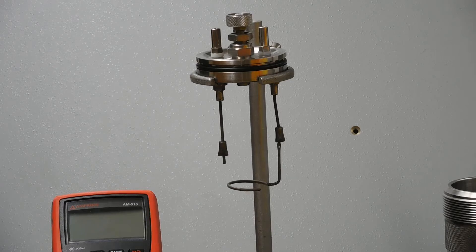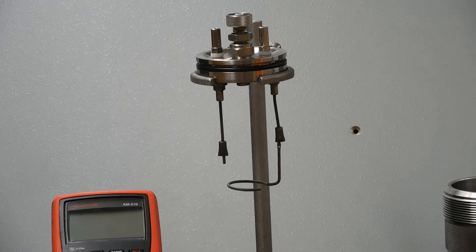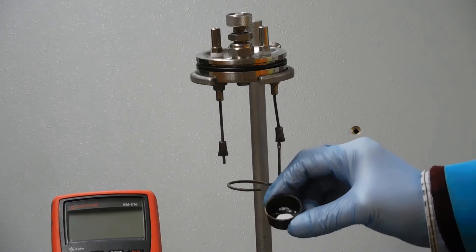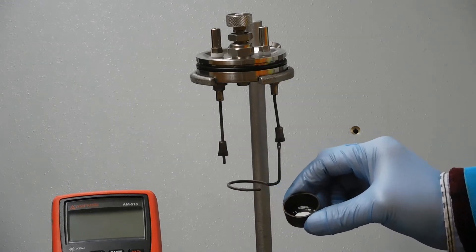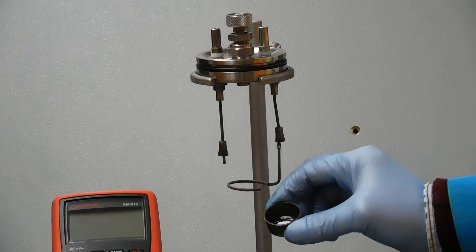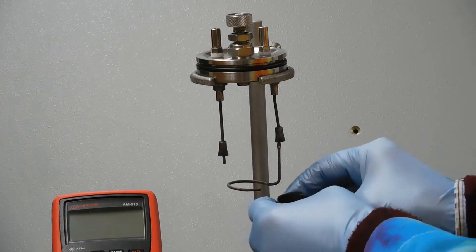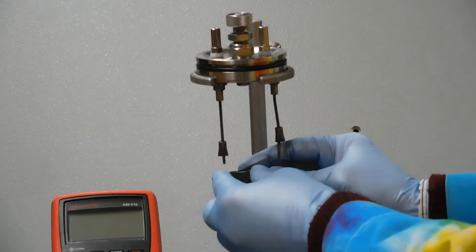In the previous video on bomb calorimetry, I showed you how to make a pellet. We got to the point of having made this pellet and put it in this little cup. This goes inside the bomb in this little holder here. The cup sits down like this.